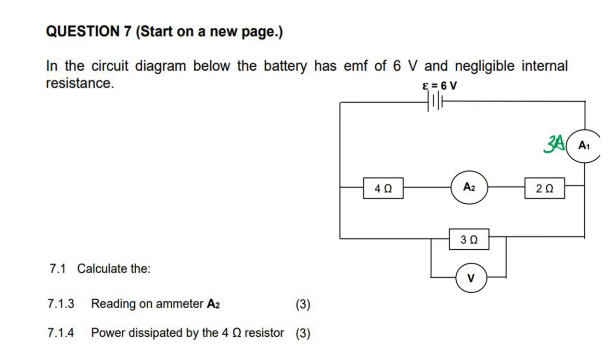This one says, what is the reading on A2? The way that it works is if you have a circuit, and let's say we had a resistor over here, and so that would have a voltmeter, let's say V1. So I'm just giving you a bit of theory now.